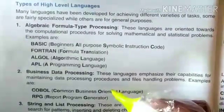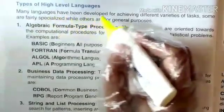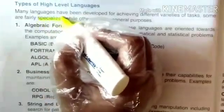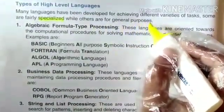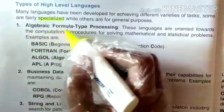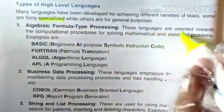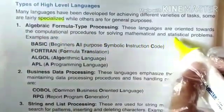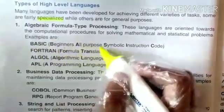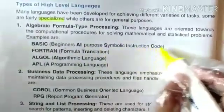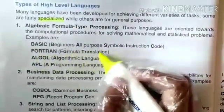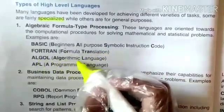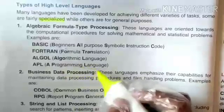Types of high-level languages: Many languages have been developed for achieving different varieties of tasks. Some are fairly specialized while others are for general purposes. Number 1: Algebraic formula type processing — these languages are oriented towards computational procedures for solving mathematical and statistical programs. Examples are BASIC (Beginner's All-purpose Symbolic Instruction Code), FORTRAN (Formula Translation), and APL (A Programming Language).